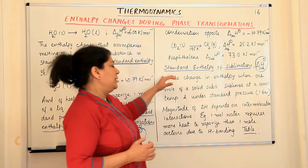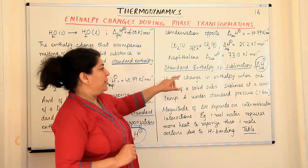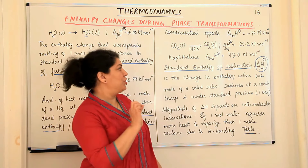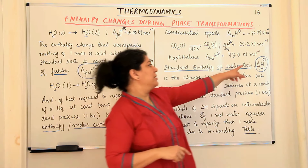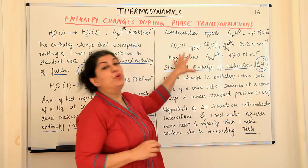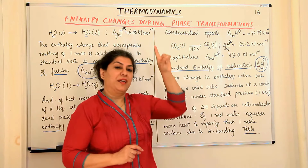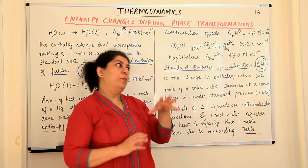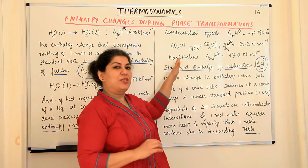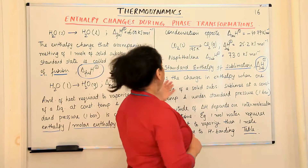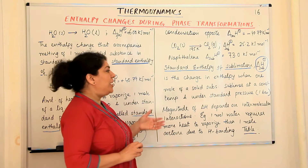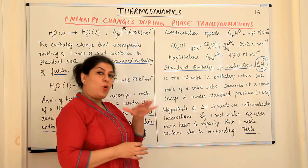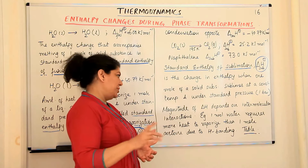The standard enthalpy of sublimation is represented by ΔH°_sub, where 'sub' represents the process of sublimation, and the degree symbol as a superscript indicates standard states — meaning the substance is pure and present at one bar pressure, though the change takes place at a temperature specific to that substance. The standard enthalpy of sublimation is the change in enthalpy when one mole of solid substance sublimes at a constant temperature and under standard pressure of one bar.